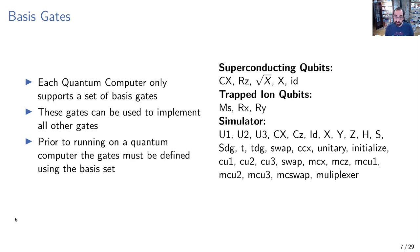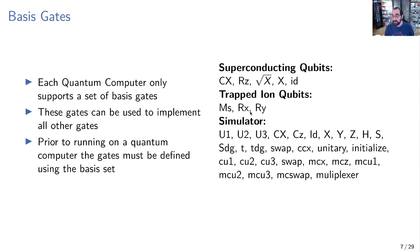On the right are some examples. Superconducting qubits, which IBM quantum devices use, have their basis set. Trapped ion qubits are another technology that uses some different gates. There's also a simulator, which can simulate pretty much any basis gate.